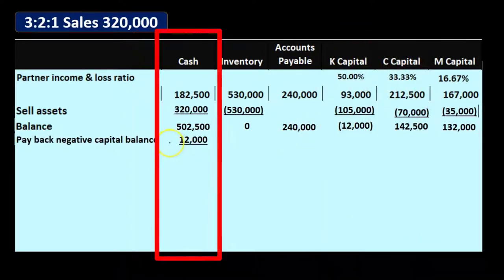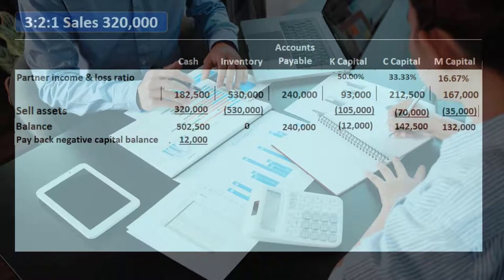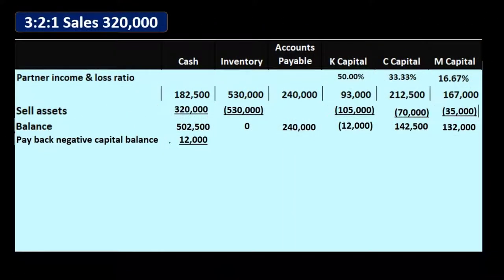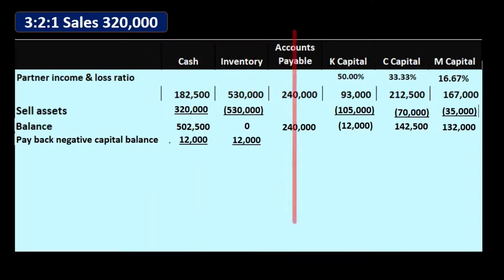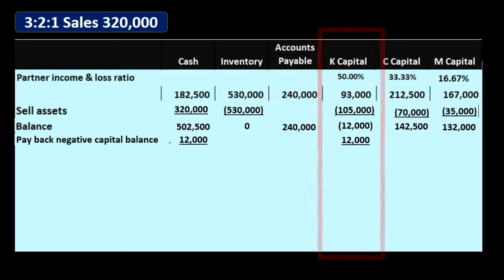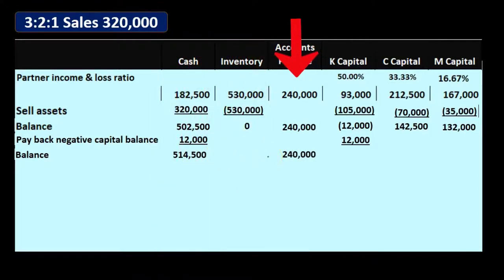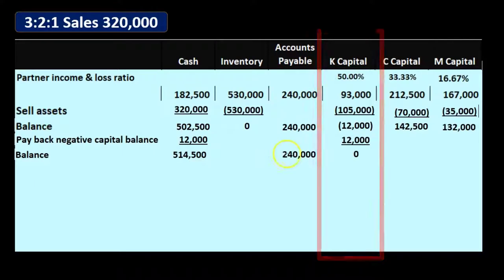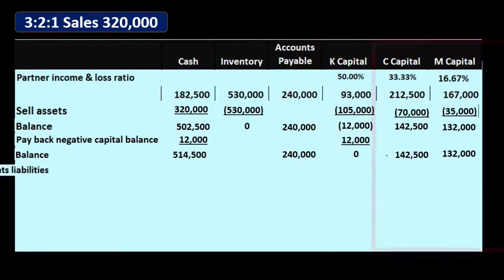So we go to K and say the company's closing, we did everything we could, your capital account went negative — would you pay the partnership so we can complete the closing process? Hopefully they will, because that's part of the process — they owe the company. K pays $12,000, which is the nice outcome. We reduce K's capital by $12,000 bringing it to zero. New cash balance: $502,500 plus $12,000 = $514,500. Accounts payable brought down at $240,000, and C and M's capitals at $142,500 and $132,000.